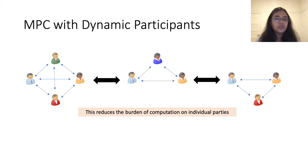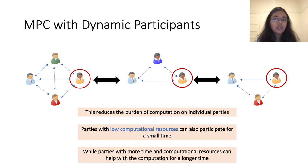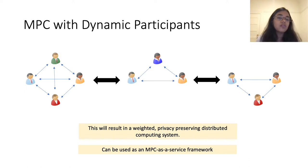This approach will clearly reduce the burden of computation on individual parties. Parties that have low computational resources — for example, the blue party here — can participate for a small amount of time, and parties that have enough dedicated resources can continue to participate for a longer time, for example, the yellow party here. Such a protocol would result in a weighted privacy-preserving distributed computing system, which can also be used as a paid MPC-as-a-service framework where clients can pay to delegate computational tasks, and anyone — irrespective of their time availability or computing resources — can volunteer to participate and get paid accordingly.